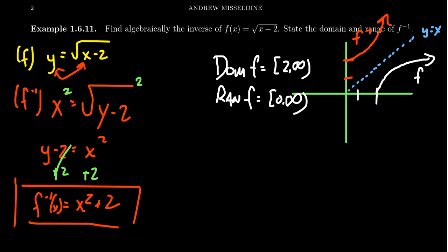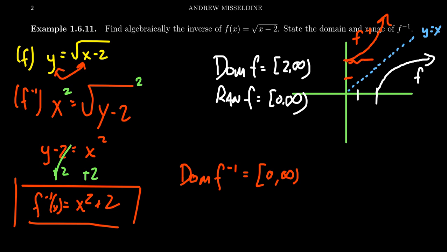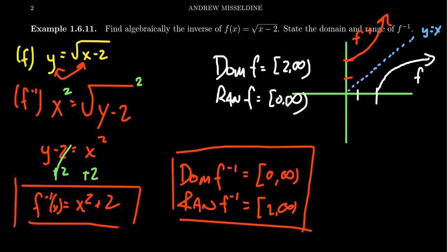We do have to be careful about domain and range. Because of the domain convention, when they see y equals x squared plus 2, you would assume the domain is all real numbers. But because of the domain and range of the original function, in order to make the inverse function one-to-one, we don't get the left hand side of this parabola. Instead, we switch the domain and range of f to give us the domain and range of f inverse. The domain of f inverse equals the range of f, which is 0 to infinity, and the range of f inverse equals the domain of f, which is 2 to infinity.